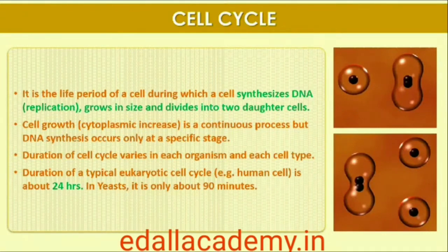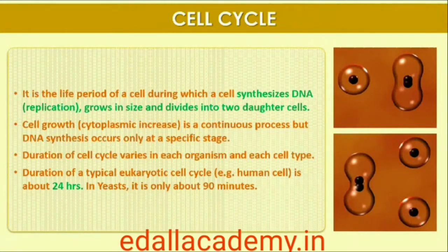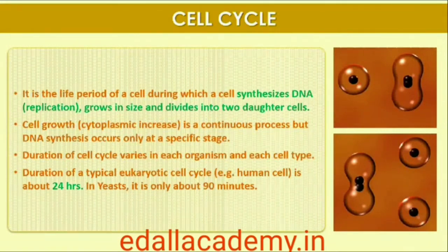Although cell growth, in terms of cytoplasmic increase, is a continuous process, DNA synthesis occurs only during one specific stage in the cell cycle. The replicated chromosomes (DNA) are then distributed to daughter nuclei by a complex series of events during cell division. These events are themselves under genetic control.